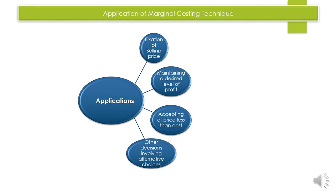Application of marginal costing technique: पहला application है fixation of selling price — marginal costing में price = marginal cost (variable cost) + reasonable level of contribution, जहाँ contribution at least इतना हो कि fixed overhead cover हो जाए और कुछ surplus बचे (profits)। दूसरा application है maintaining a desired level of profit — अगर हमें पता हो कि हमें इतना profit कमाना है, तो उसके लिए कितनी sales करनी पड़ेगी — marginal costing इसमें help करती है।